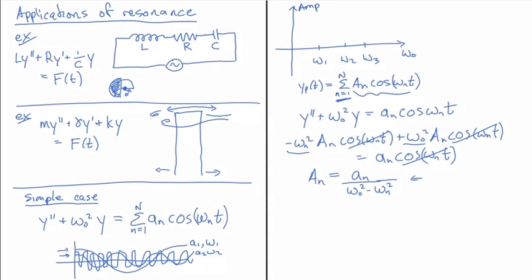When we reassemble our solution, we get yₚ(t) equals the sum from n=1 to N of aₙ/(ω₀² - ωₙ²) all multiplied by cos(ωₙt), and that will be our solution. So when we go back up here to this diagram, what we're going to have is we're going to have three separate responses.